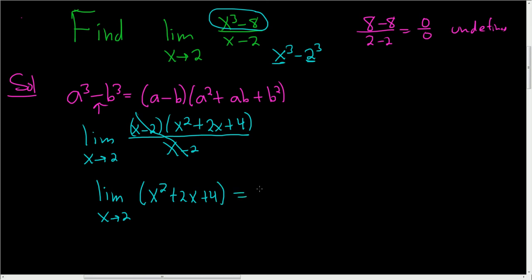And so this is equal to 2 squared plus 2 times 2 plus 4. Just plugging in the 2. Remember, when you're taking limits, if you can plug in the number and it makes sense, go for it.